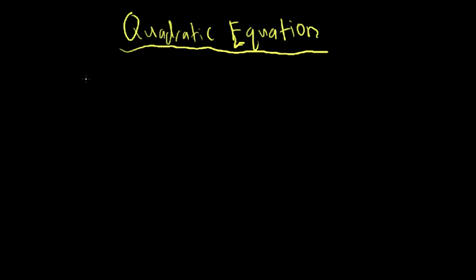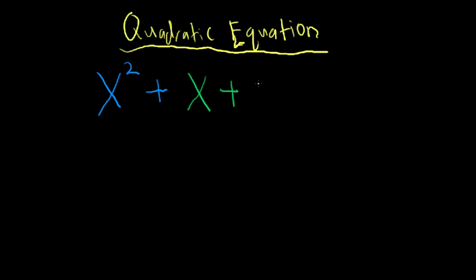A quadratic equation is actually pretty simple. All it is is an equation in which your variable — usually x — the greatest power that your variable is raised to, is 2. You can have powers of x lower than that, so you can have just a normal x, and you can have just normal numbers — like a 10 or something. To be an equation, it needs to have an equal sign, and it can have any of these elements on the other side, because you can just use algebra to move them to either side.